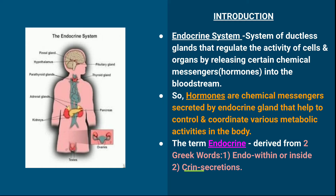Now, what are hormones? Hormones are chemical messengers secreted by endocrine glands, also called ductless glands, that help to control and coordinate various metabolic activities in the body. The term 'endocrine' has been derived from two Greek words: 'endo,' meaning within or inside, and 'krin,' meaning secretion.